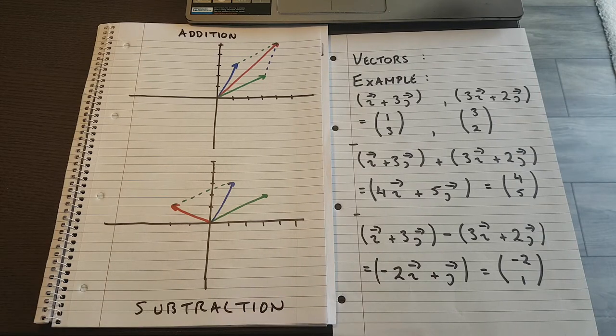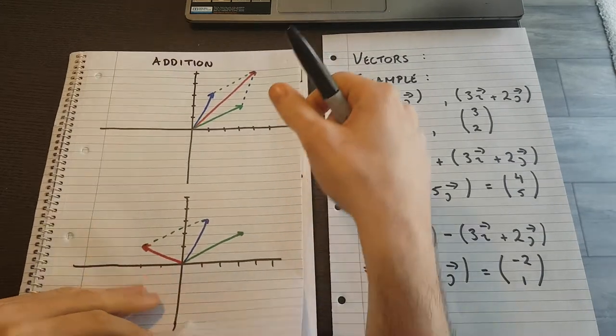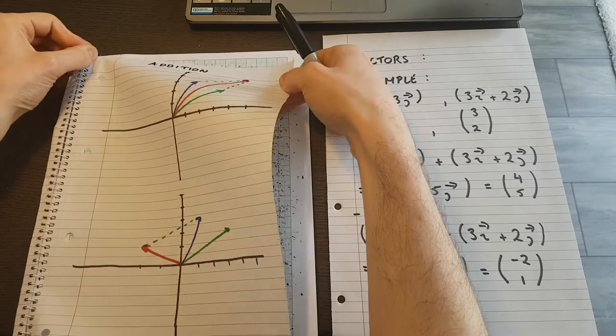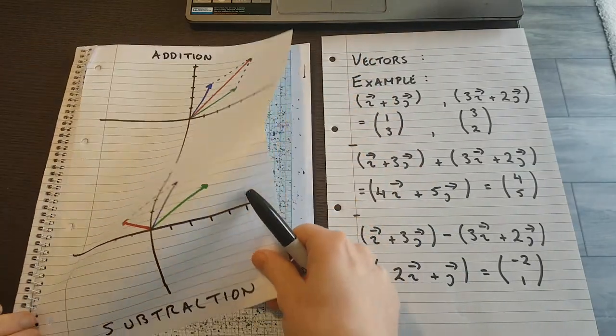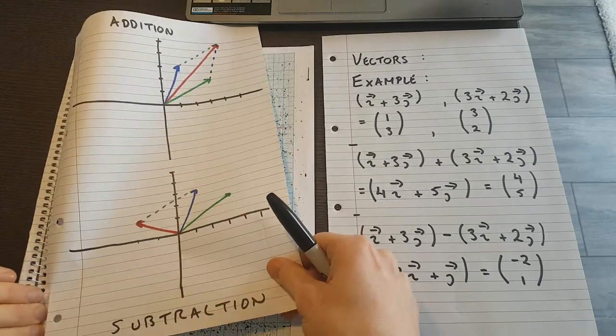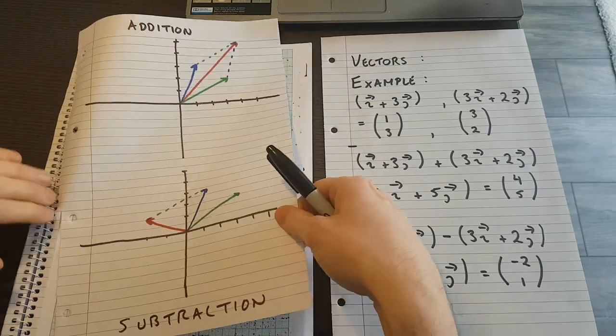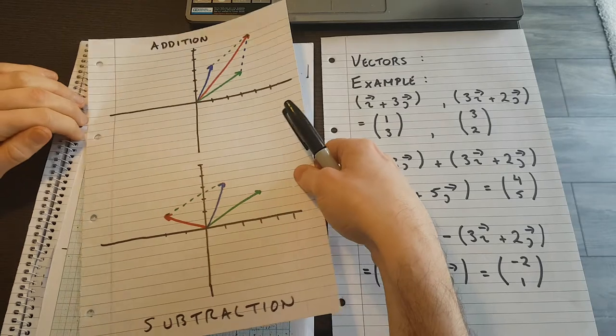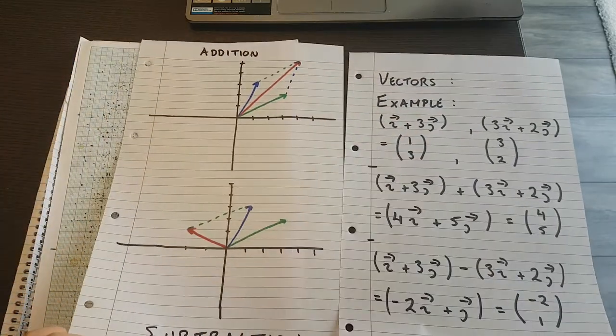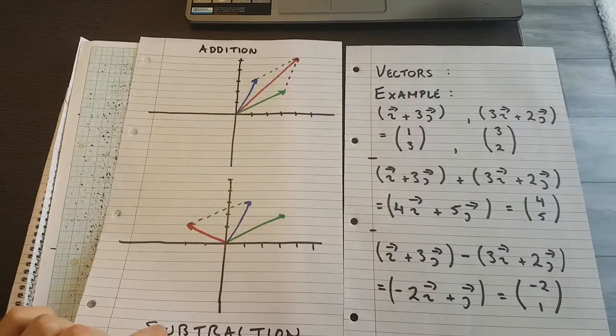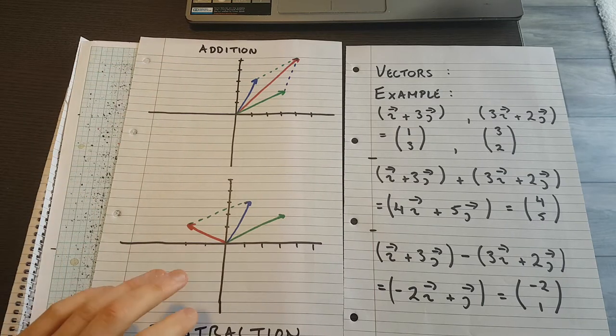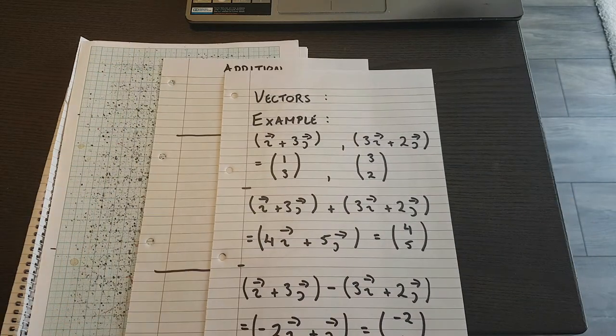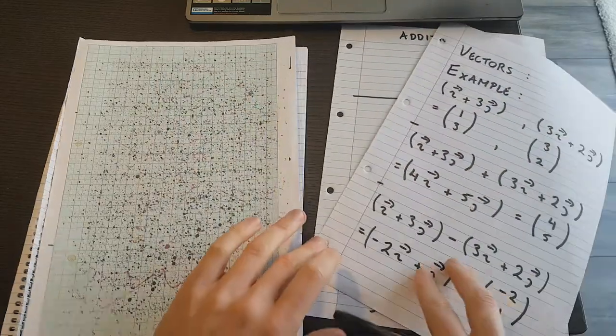So this is addition. And this is subtraction. My cat is purring. You'll probably hear that. Or meowing. I'll continue. So, that's how I can visualize addition and subtraction. And I have these parallelogram rules. And the parallelogram rules define how these work.